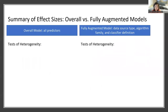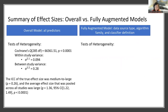Moving into the results section. In our overall model, we found significant heterogeneity of effect sizes. Despite this, the ICC of the true effect size was medium to large, and the average effect size pooled across all studies was large and statistically significant.